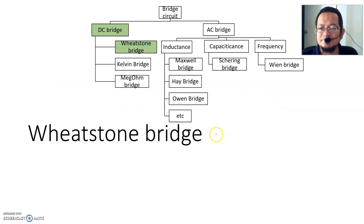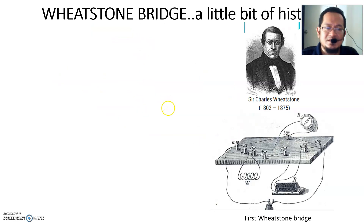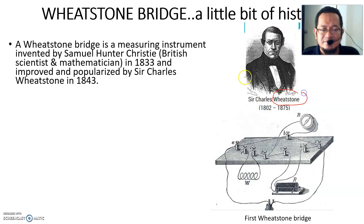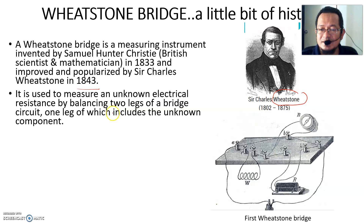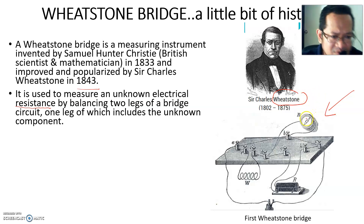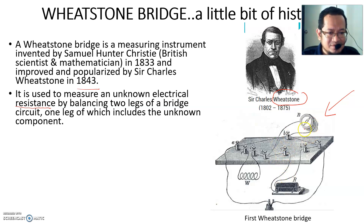Let's talk about the Wheatstone bridge first. A little bit of history: this bridge is a measuring instrument invented by Samuel Hunter Christie in 1833, and then improvised and popularized by Sir Charles Wheatstone in 1843 — about a hundred years ago. It is used to measure unknown electrical resistance by balancing two legs of a bridge circuit, one of which includes the unknown component.